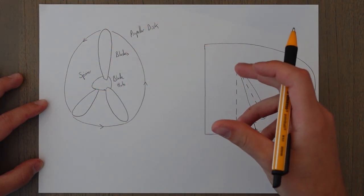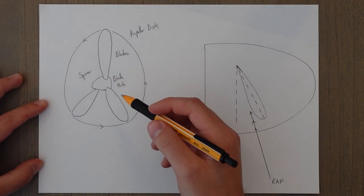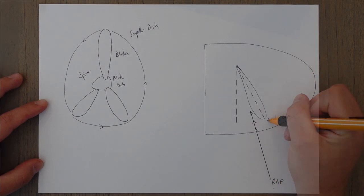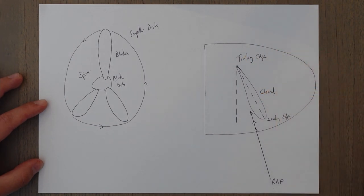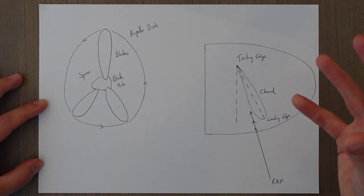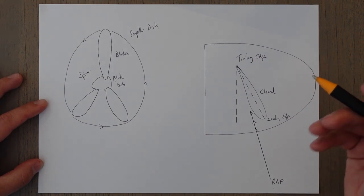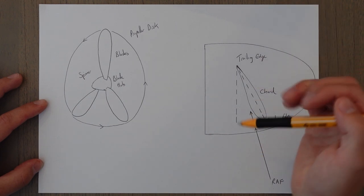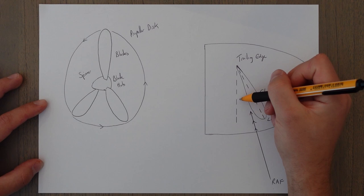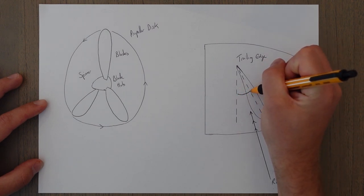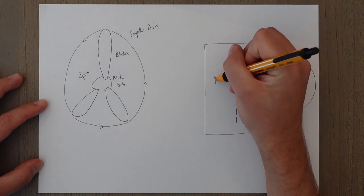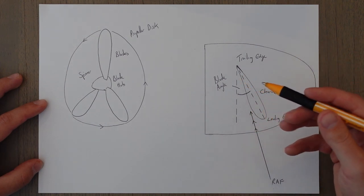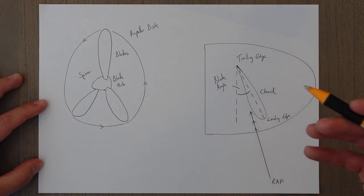Propellers are essentially small wings all mounted onto the blade hub at their roots, so they share a lot of the terminology that you get with wings — such as the leading edge, the trailing edge, and the chord line, which is the line between the trailing edge and the leading edge. There are however some differences. The blade angle is the angle between the plane of rotation and the chord line. This is similar to the angle of incidence on a regular wing, and this angle is measured at a distance of 75% of the propeller length.